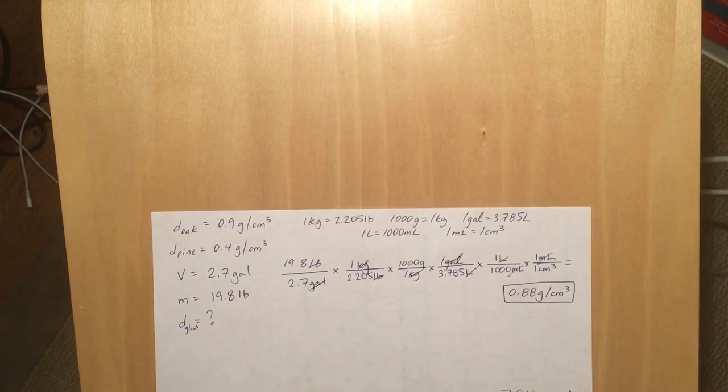So let's go ahead and convert gallons to liters. Using that next conversion factor over, that cancels out gallons. We still have liters, so we're going to convert that to milliliters. And then lastly, we're going to use the last conversion factor to cancel out our mils and get cubic centimeters.